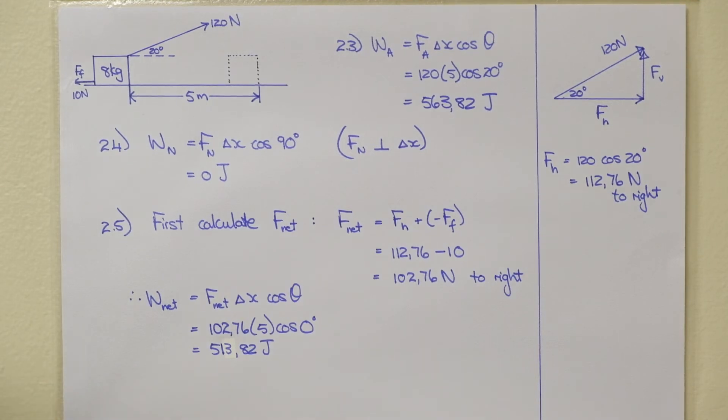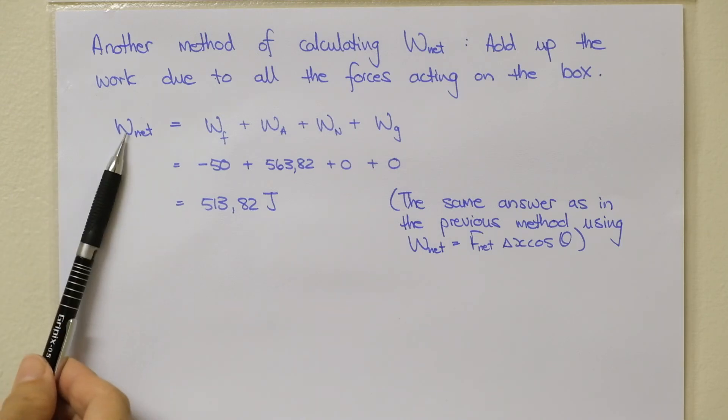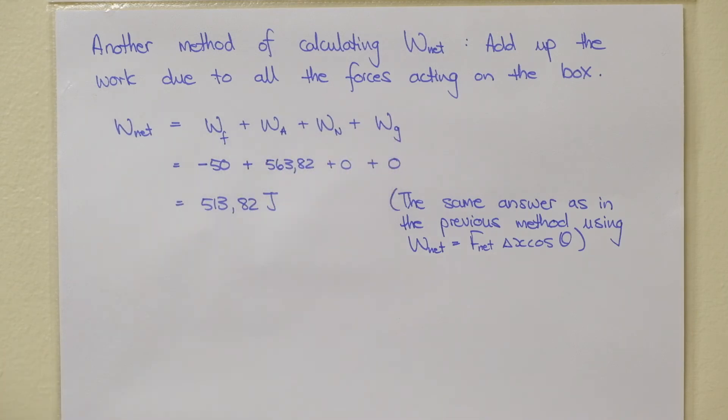And now I'm going to show you another method for calculating W net. The other method for calculating W net is to add up the work due to all the forces acting on the box. So if you go back to your free body diagram, you will see that the forces are frictional force, work due to the applied force, the normal force and the gravitational force.